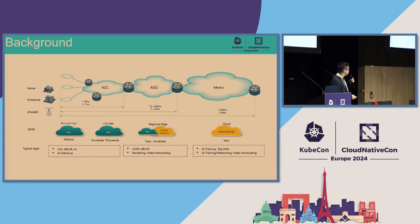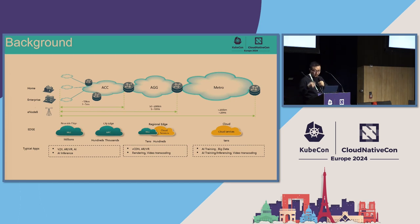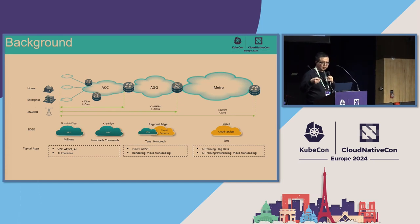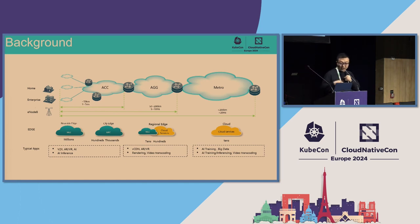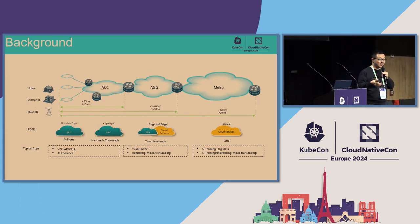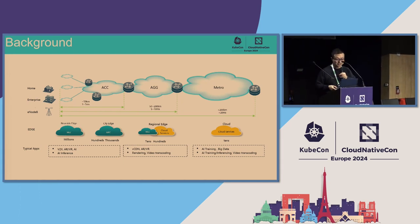This is some background I want to introduce for edge computing. From right to left, you can see the cloud service, regional edge, city edge, and near-side edge. In cloud services, we do AI training, big data processing, and other tasks. At the regional and city edge, we have CDN and VR/AR processing. The near-side edge generates more and more data. So how to manage edge devices and process edge data has become increasingly important.